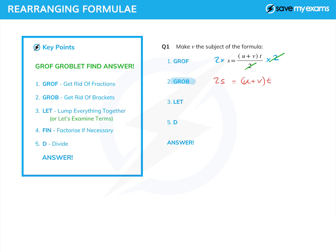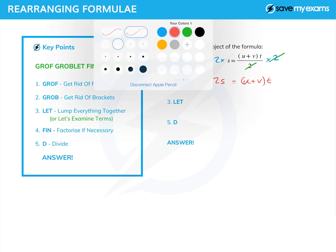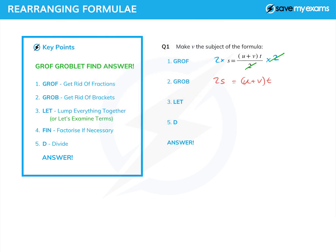Now we're told to get rid of the brackets. If you've looked at the tutorial on multiplying out one bracket or simple brackets, you know that we just link the thing on the outside to each term in turn on the inside. So t gets linked to u and to v, and then we multiply. So 2s is equal to — the top link there is u times t, and the bottom link is v times t — so I've got ut plus vt.